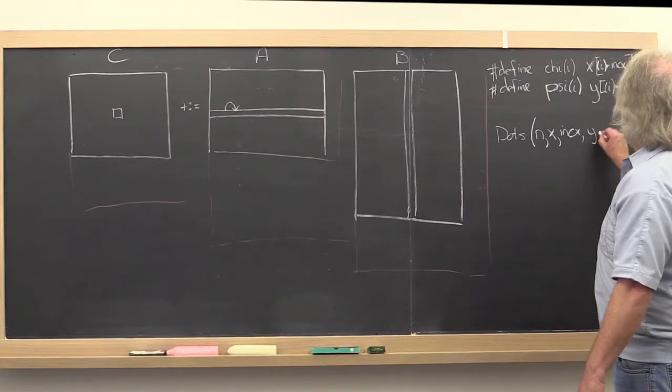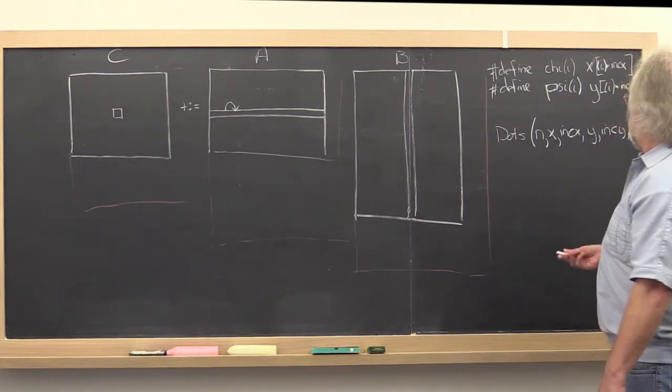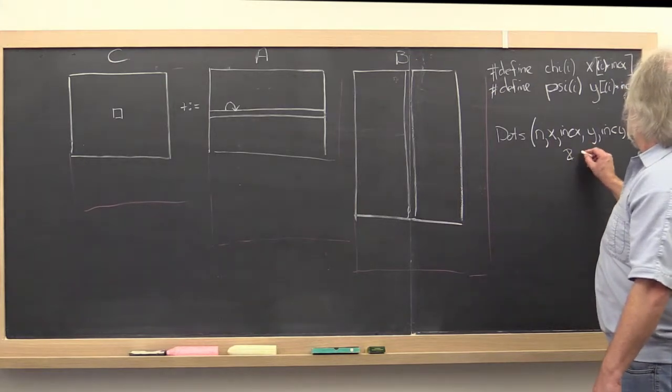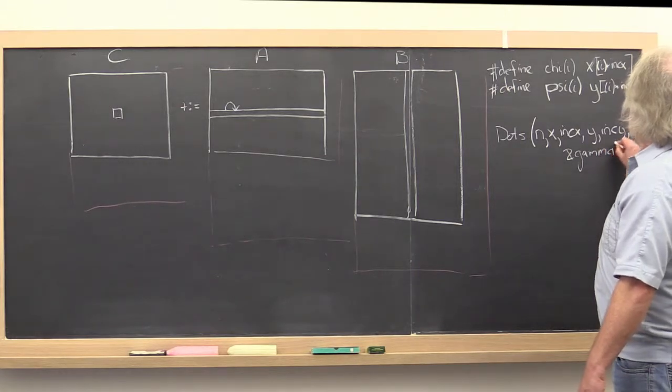that tells you how to march through memory to get from one element of x to the next. And then y and the same thing, an increment for y, and then the address of what you're trying to update with the dot product.